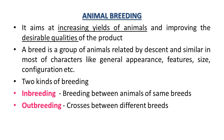Now let's talk about animal breeding. Breeding of animals is an important aspect of animal husbandry. Animal breeding aims at increasing the yield of animals and improving the desirable quality of the produce. The word 'breed' refers to a group of animals related by descent and similar in most characters — like general appearance, features, size, and configuration.